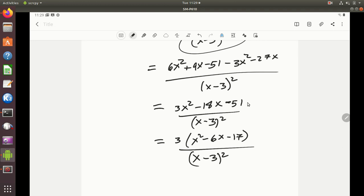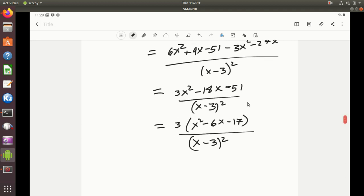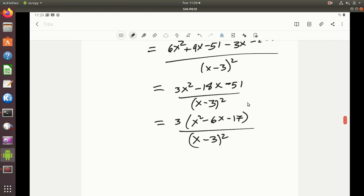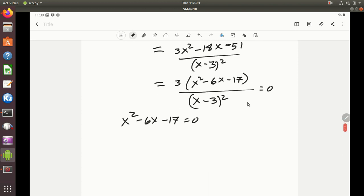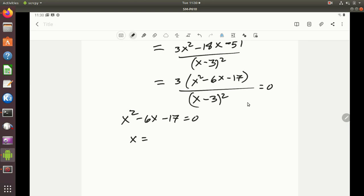So this is 3x squared minus 18x minus 51 all over x minus 3 squared. And I can factor a 3 out. So this is 3 times x squared minus 6x minus 17 all over x minus 3 quantity squared. Now let's see, if I did all my calculations correctly, I'm not going to be able to factor this thing. On the other hand, it does have roots. I can set this thing equal to 0 and get an answer.